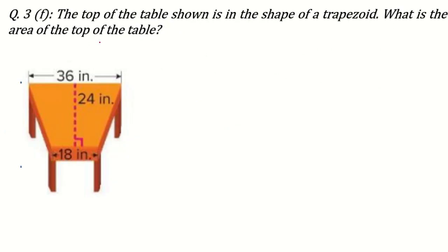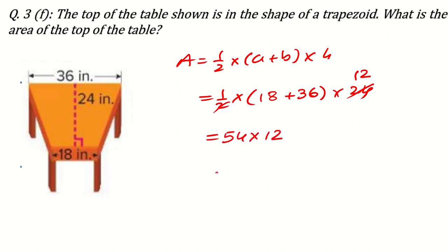Next can be, the top of a table shown is in the shape of a trapezoid. What is the area of the top of the table? Again, the similar question. So, its area will be half of A plus B times height. So, it is equal to half of A plus B means 18 plus 36 times height means 24. That is 24 divided by 2. This 24 divided by 2 means 12. 18 plus 36, I think it is 54. 54 times 12, multiply this. 12 times 4, 48. 12 times 5, 60, 60 and 4, 64 inch square. This is the area of this table top. Only this upper surface area.